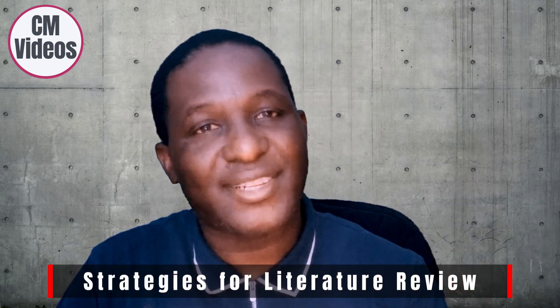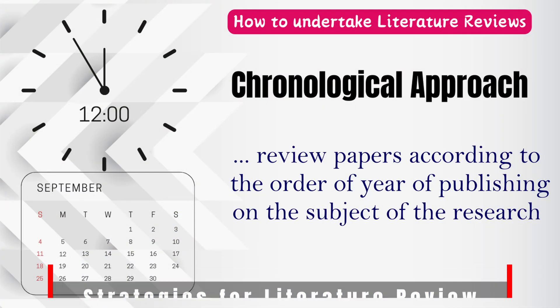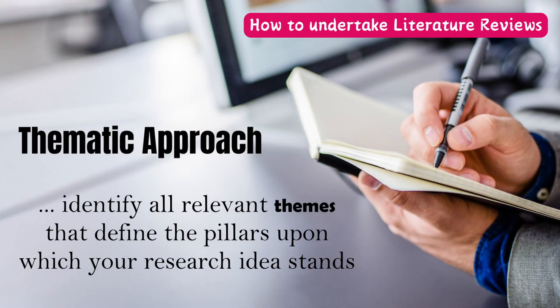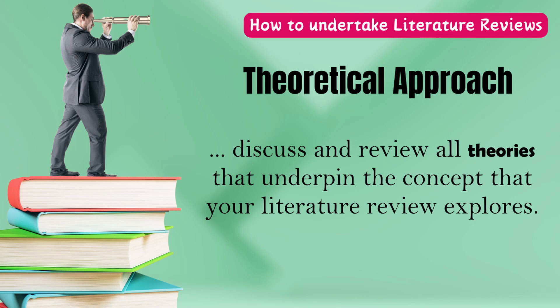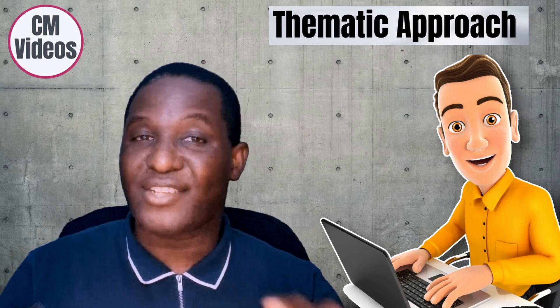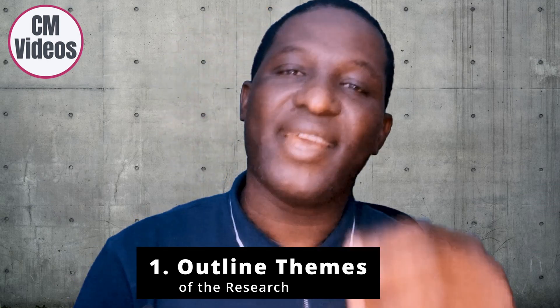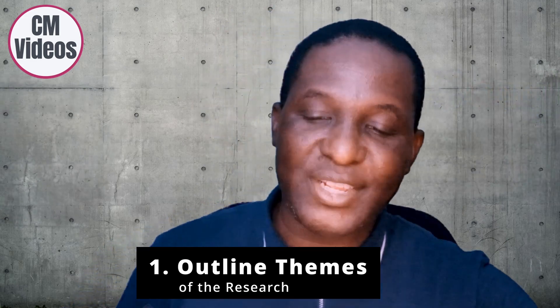There are different strategies for doing a literature review. You can use a chronological approach, reviewing papers according to when they were published. You can use a thematic approach, identifying relevant themes that describe what you're trying to do. Or you can use a theoretical approach, looking at the theory behind what you're exploring. I've recommended Stephen use a thematic approach, and he's confused about what themes means, so we'll start with the outlining stage.